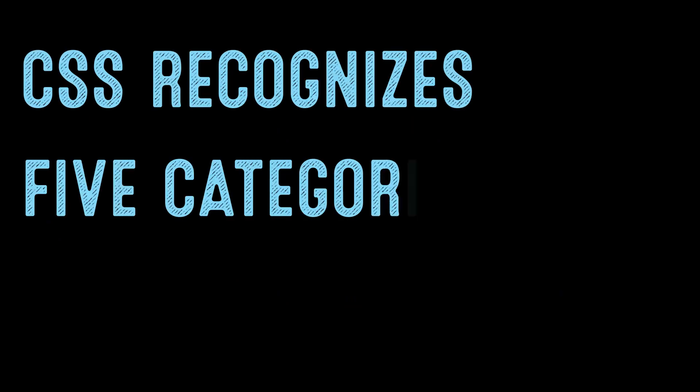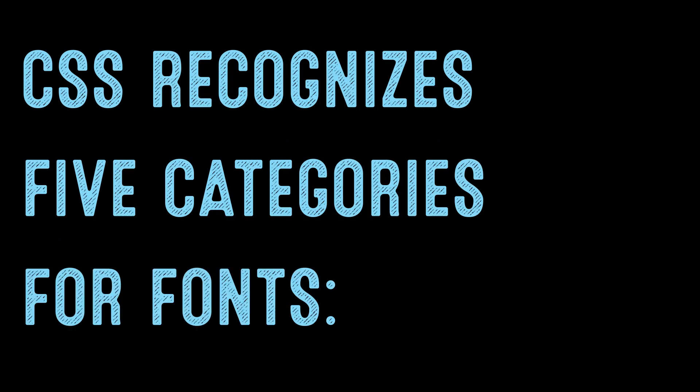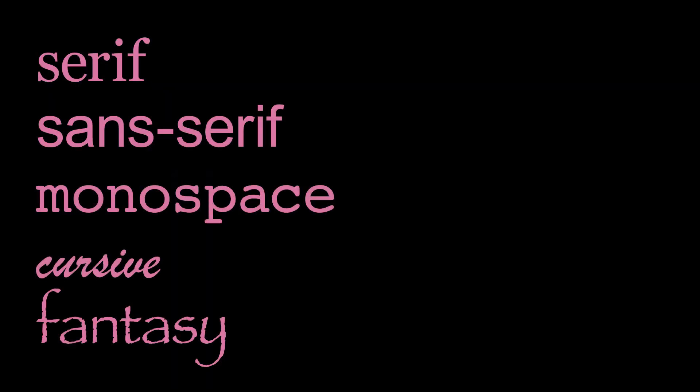The first states that all paragraph text should be set in Georgia. The second states that all paragraph text should be set in Georgia, but if it is unavailable, then the browser should pick an available serif font. CSS recognizes five categories for fonts: serif, sans-serif, monospace, cursive, and fantasy.